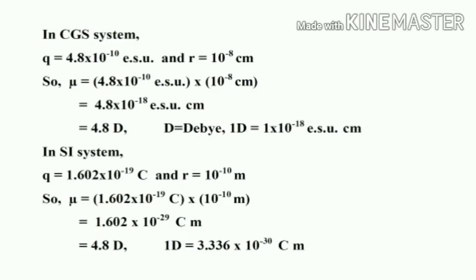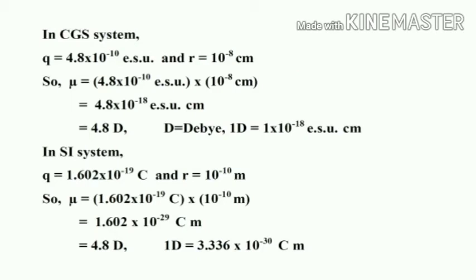In the CGS system, the charge of an electron is q = 4.8 × 10⁻¹⁰ esu, and r = 10⁻⁸ cm, which is the distance between the nucleus and the electron of a molecule. Therefore, mu = 4.8 × 10⁻¹⁰ × 10⁻⁸ = 4.8 × 10⁻¹⁸ esu·cm = 4.8 Debye, where 1 Debye = 1 × 10⁻¹⁸ esu·cm.